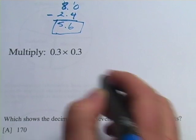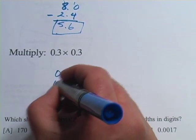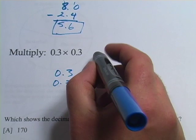Next, we have a multiplication problem, 0.3 times 0.3. Hey, that's 0.3 squared.